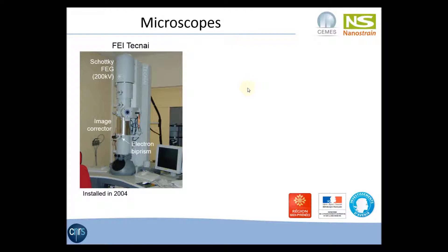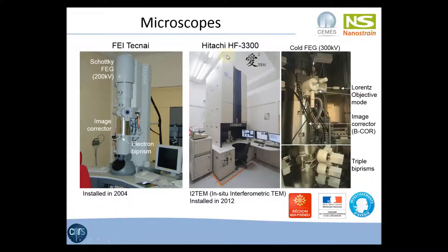To do this, we use two microscopes. The first one is a FEI Tecnai machine with a Schottky field emission gun, an image corrector, and a single electron biprism. For this presentation, holography was carried out using the Lorentz stage, which is above the objective lens, in order to have a large field of view, and using two biprisms in order to remove the Fresnel fringes and have better control of the hologram width and the fringe spacing.